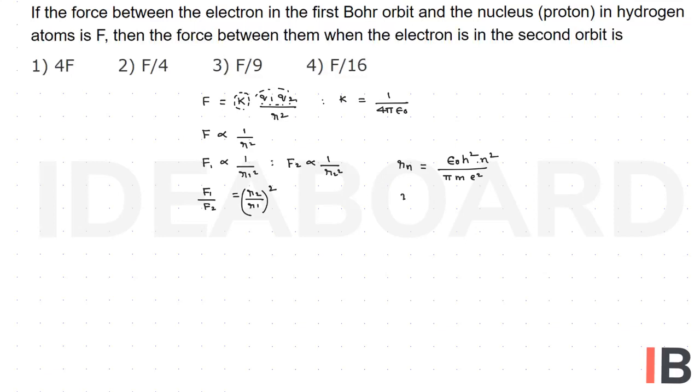We know the value: radius of the first orbit is equal to 0.53 angstrom, radius of the second orbit is 2.12 angstrom. Now taking the substitution, F1 by F2 equals r2 squared over r1 squared, which is 2.12 by 0.53, whole square.